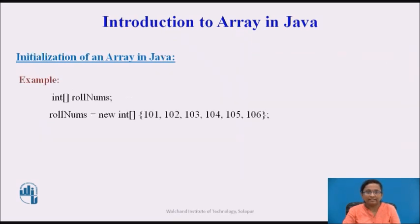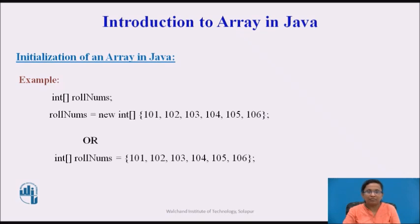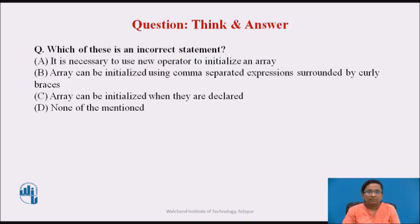Another way of initializing an array in Java: the first line declares an array variable named roleNums; the second line instantiates and initializes the array roleNums with values. This statement is equivalent to declaring and initializing the array in a single statement at the time of declaration. You can pause the video and answer the below question: which of these is an incorrect statement? The answer is option A, because array can be initialized using both the new operator and a comma-separated expression surrounded by curly braces. It is not necessary to always use the new operator at the time of array initialization.